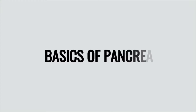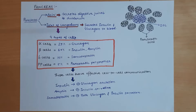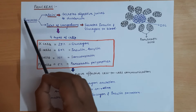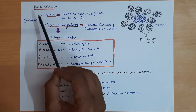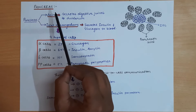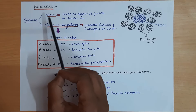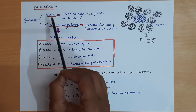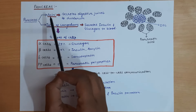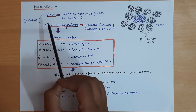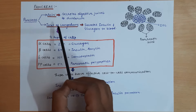The pancreas mainly has two types of cells: pancreatic acini and islets of Langerhans. Pancreatic acini constitute 96 to 98 percent of the pancreas, while islets of Langerhans make up just 2 to 4 percent.